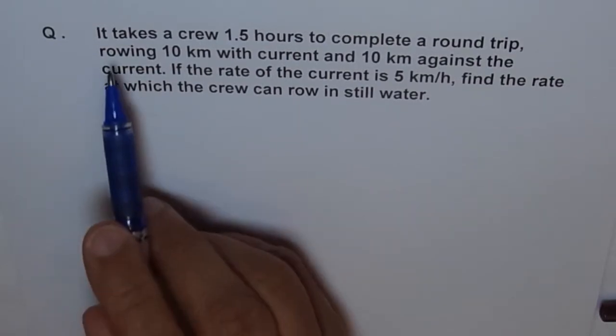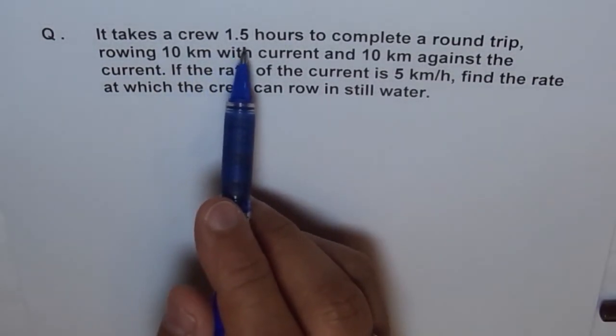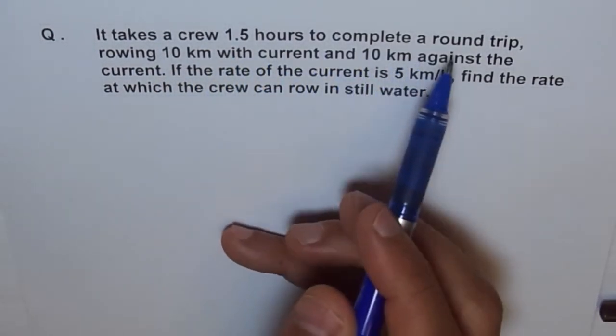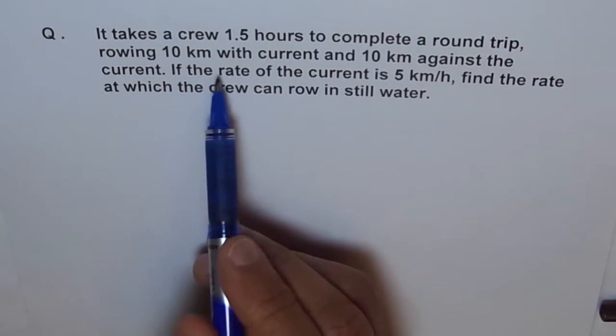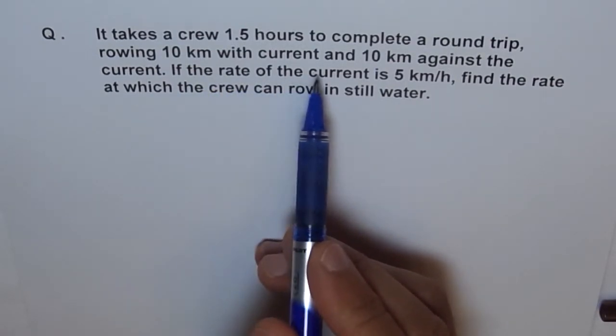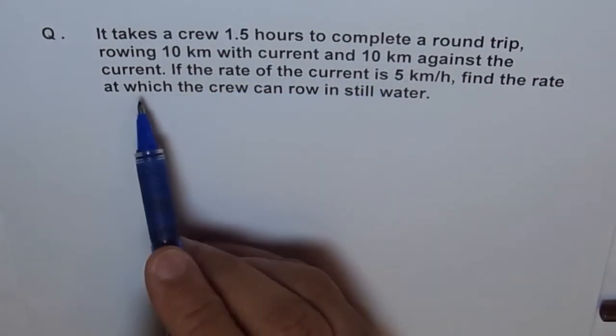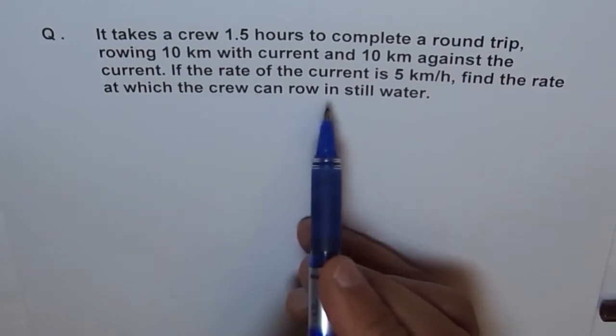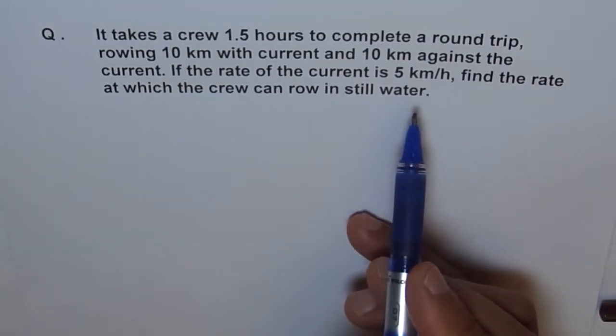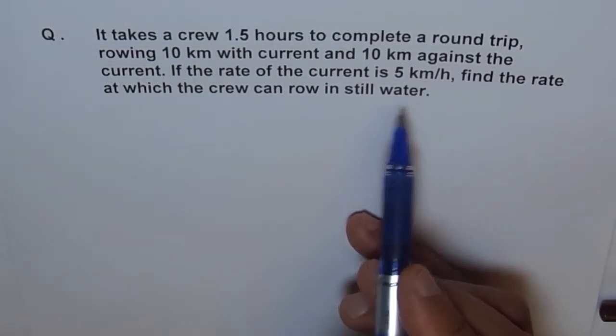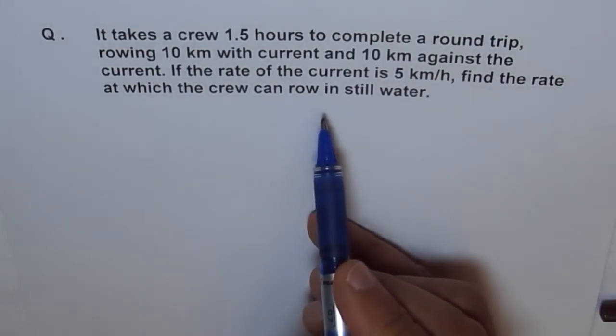It says, it takes a crew one and a half hour to complete a round trip, rowing 10 kilometers with current and 10 kilometers against the current. If the rate of current is 5 kilometers per hour, find the rate at which crew can row in still water.